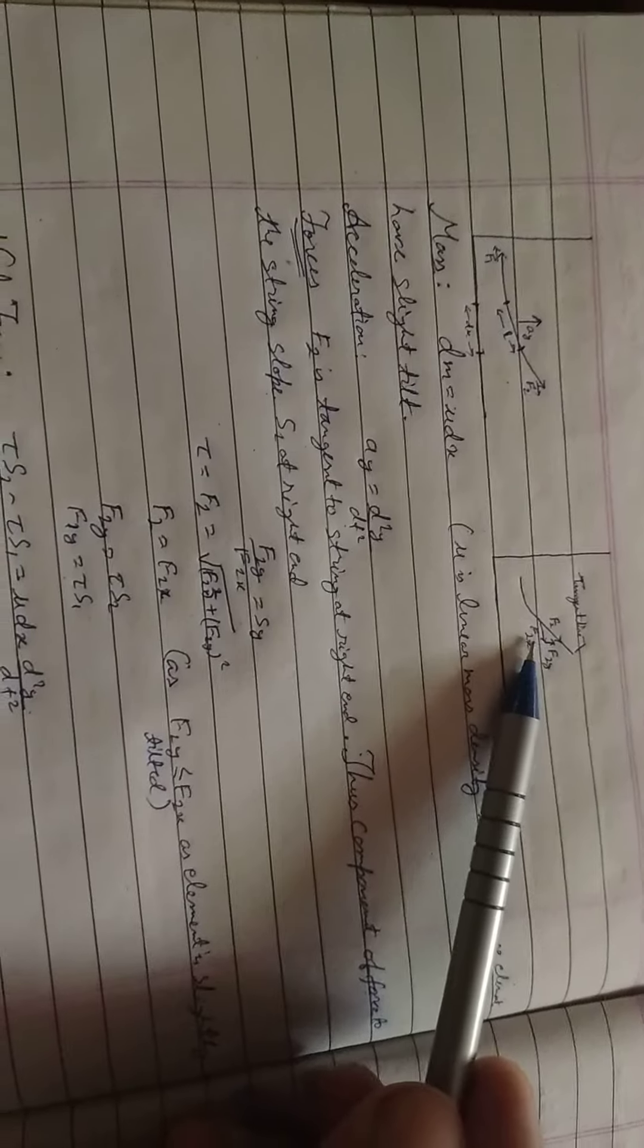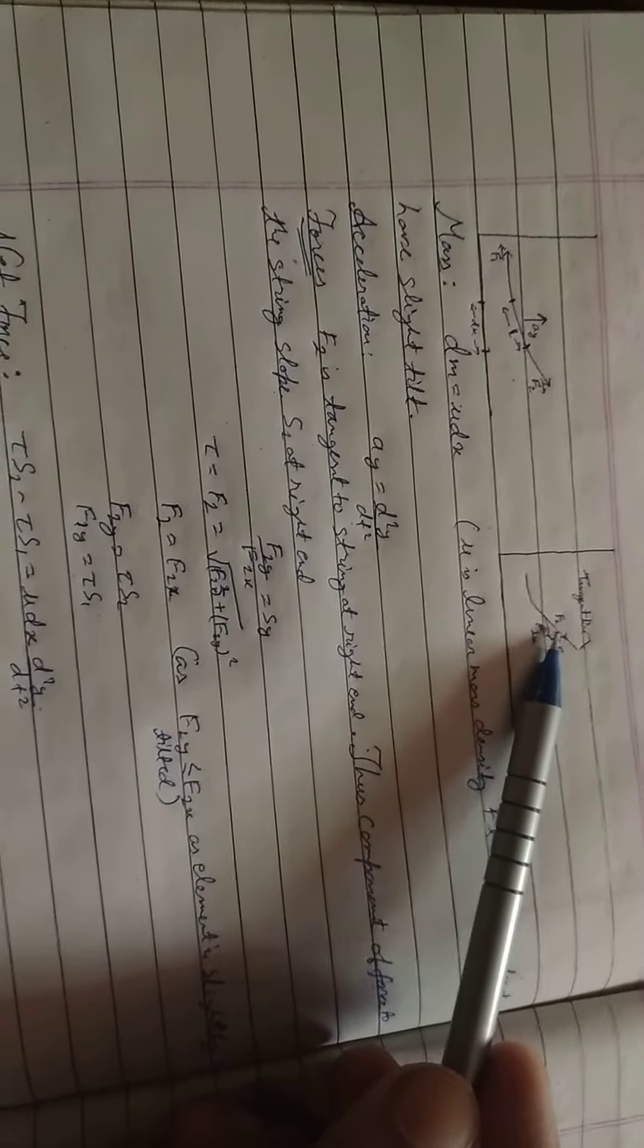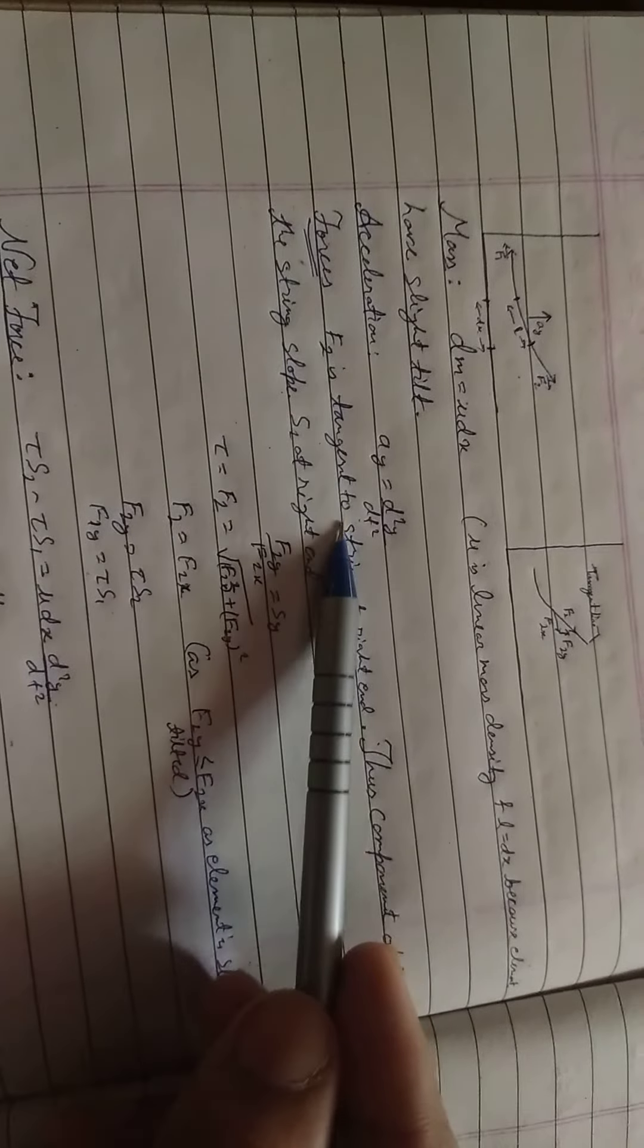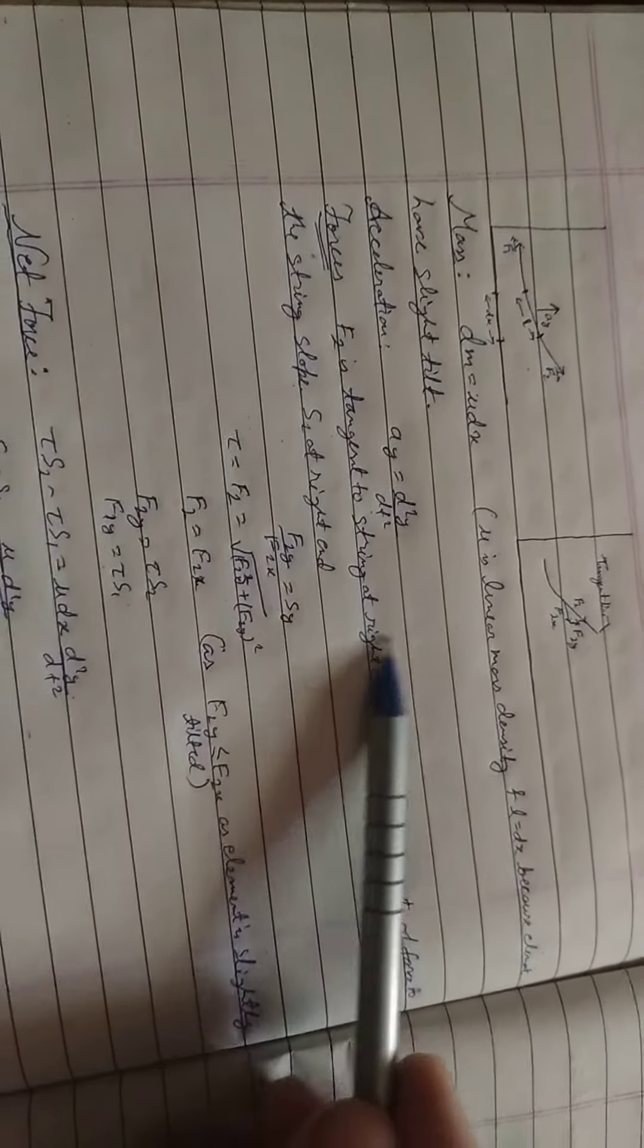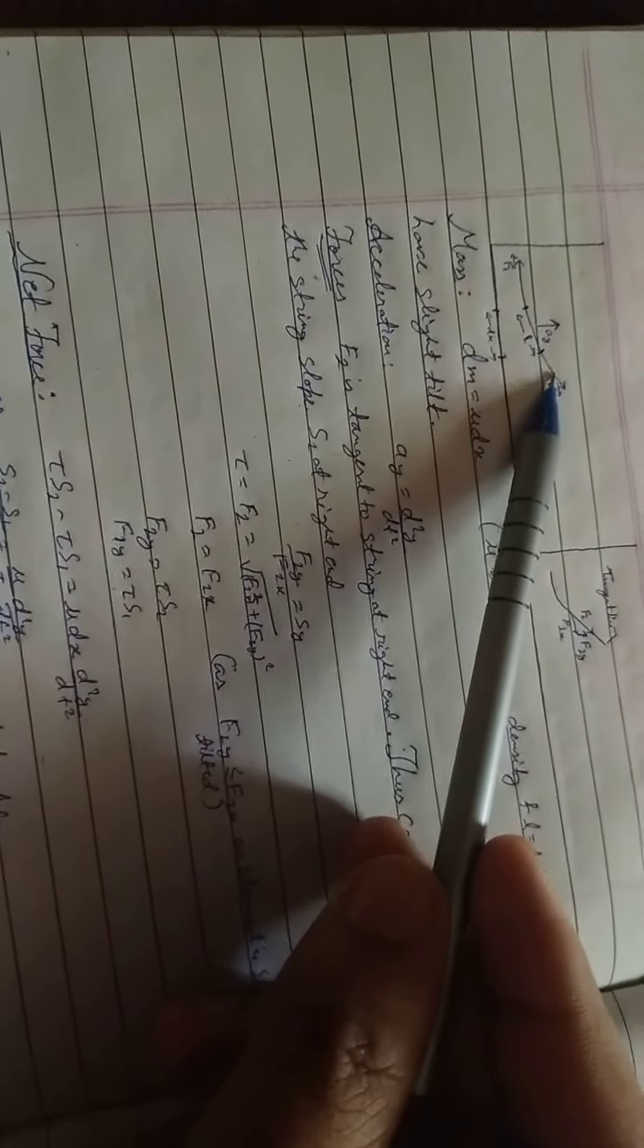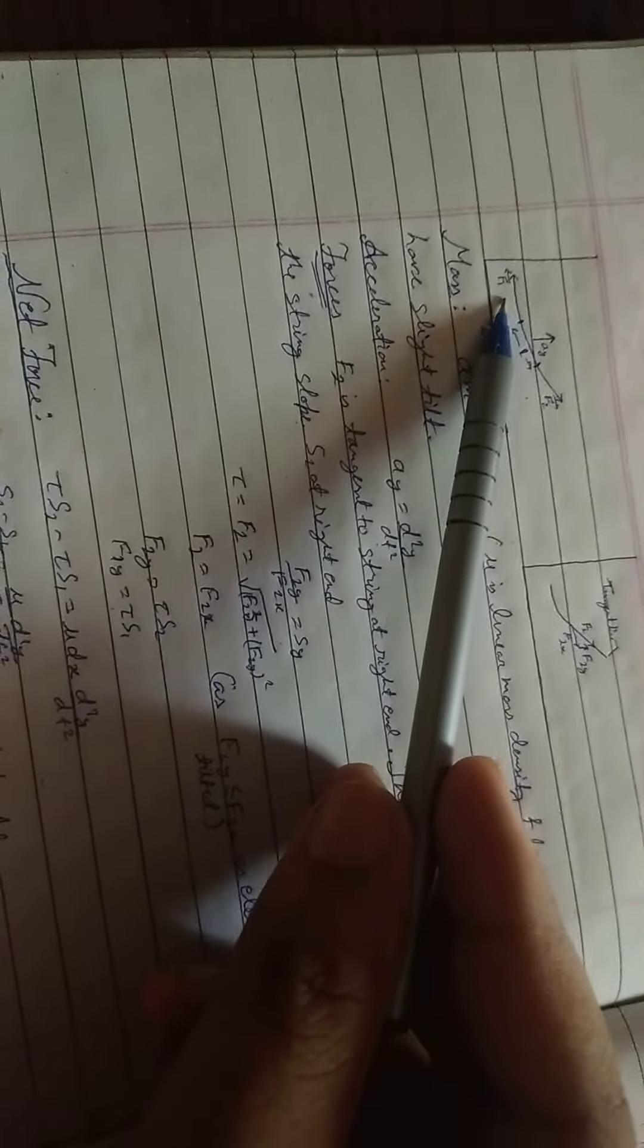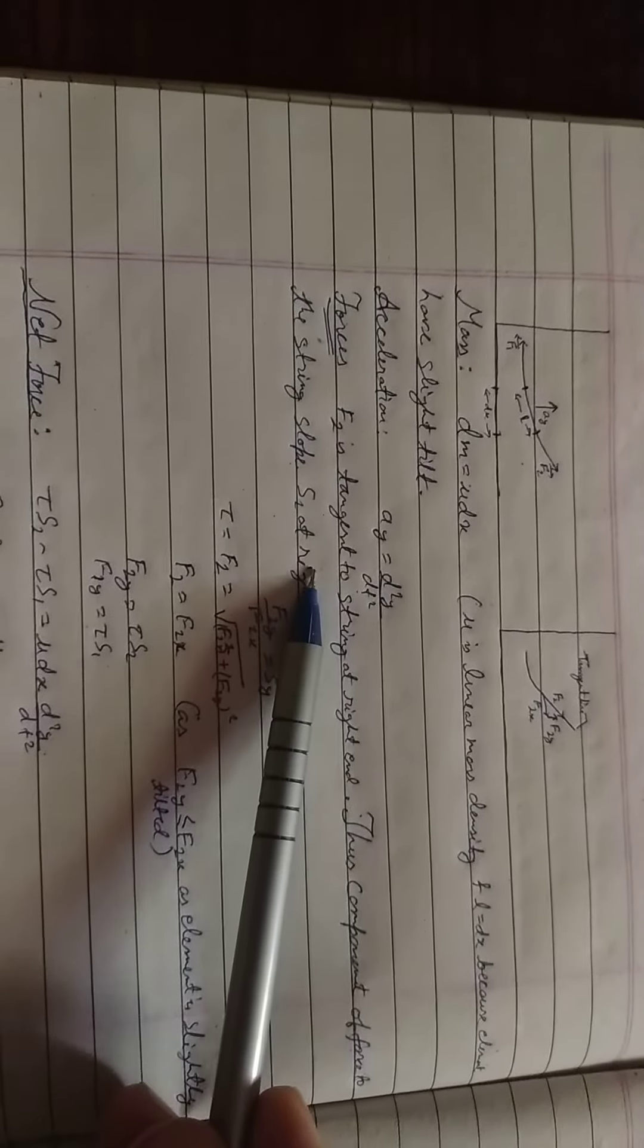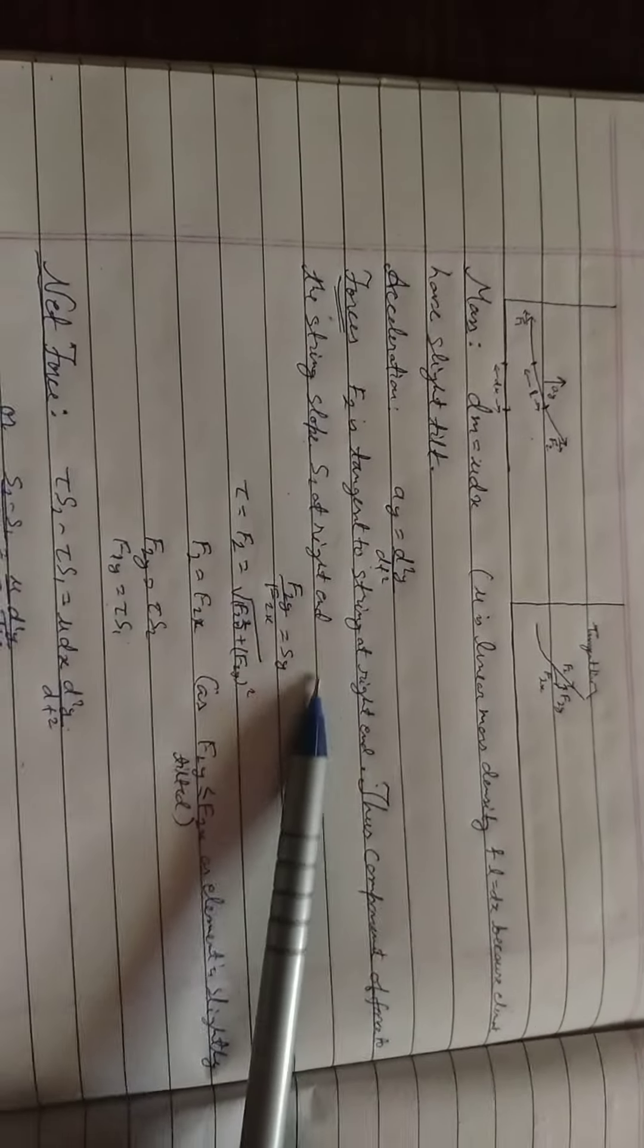f2 is tangent to the string at the right end. This is f2 at the right end and this is f1 at the left end. f2 is tangent to string at right end.